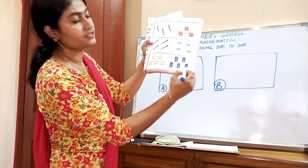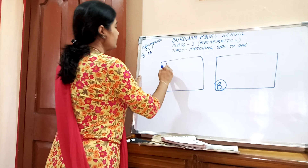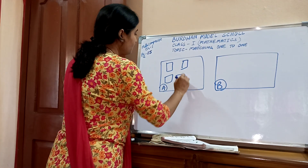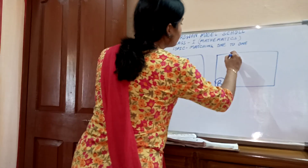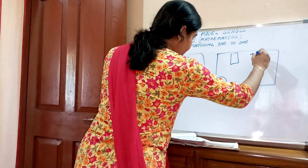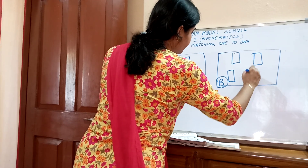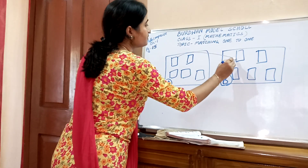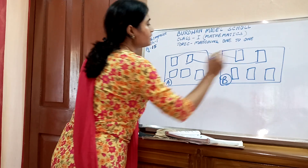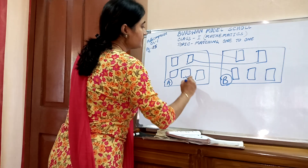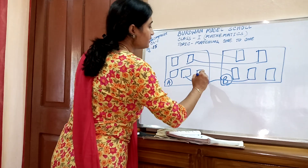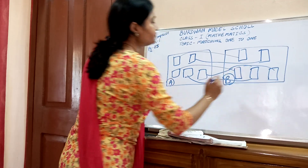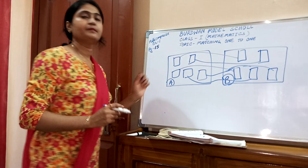Shirt with trouser and shirt with trouser. There are five shirts and five trousers given. Now match shirt with trouser, shirt with trouser, shirt with trouser, shirt with trouser, and shirt with trouser. Okay children, please match it.